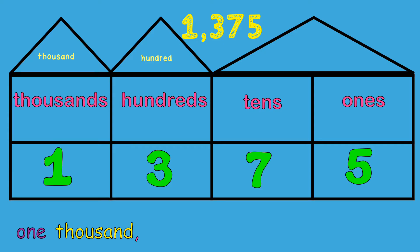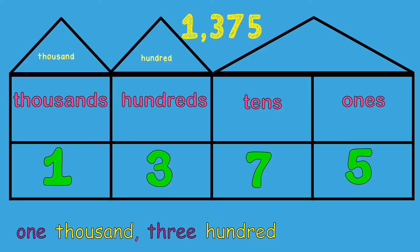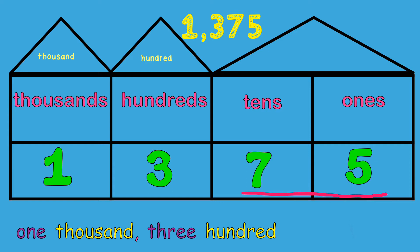The next number we will work with is the number 3. We will write that in word form. The number 3 is in the hundreds place, so the word hundred goes behind it, followed by the last two numbers together: 75.